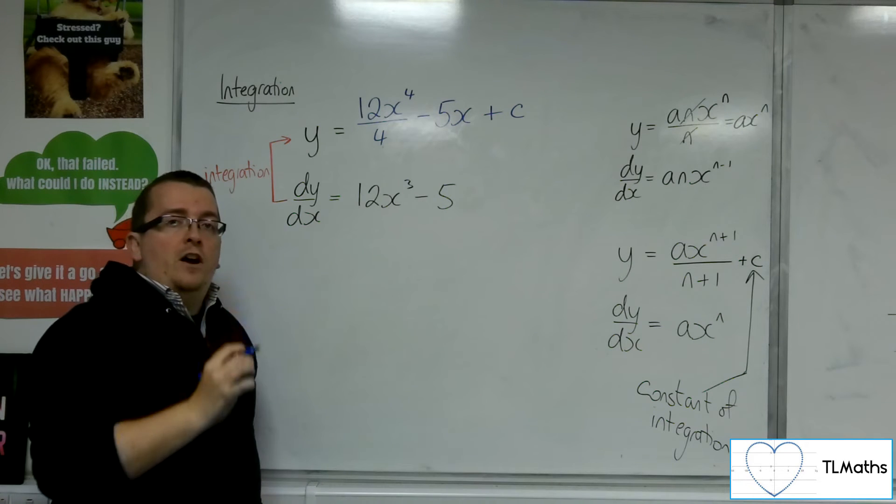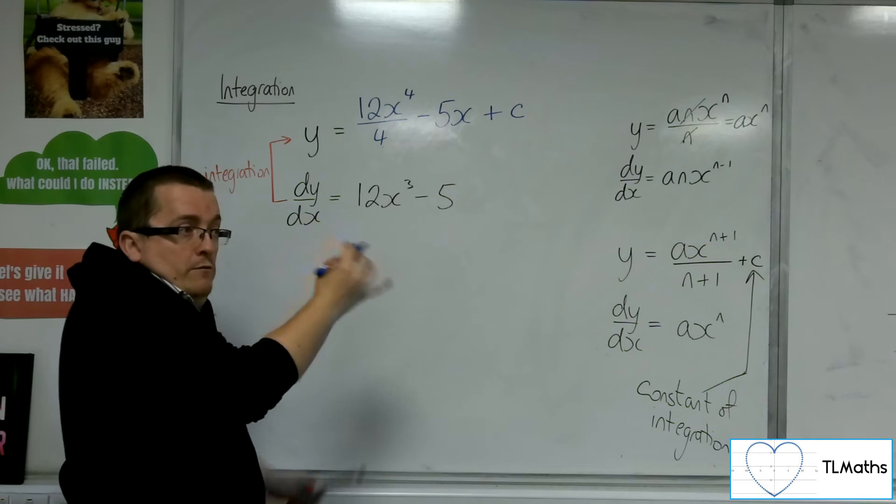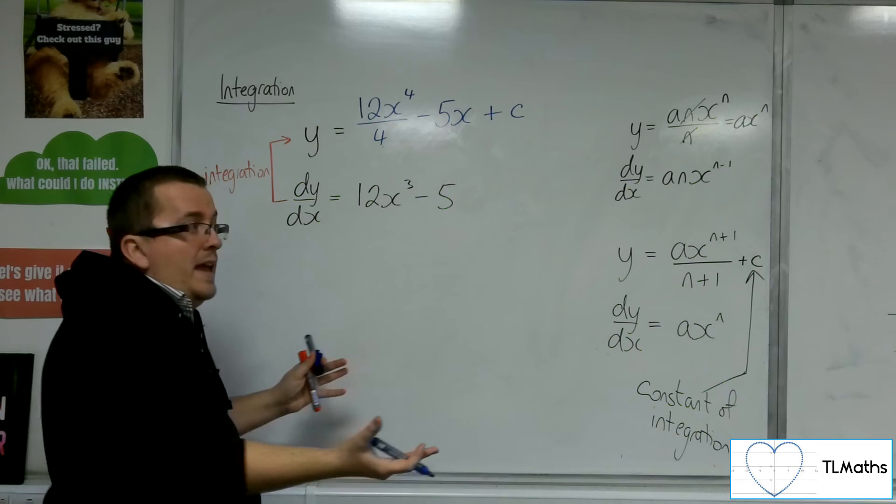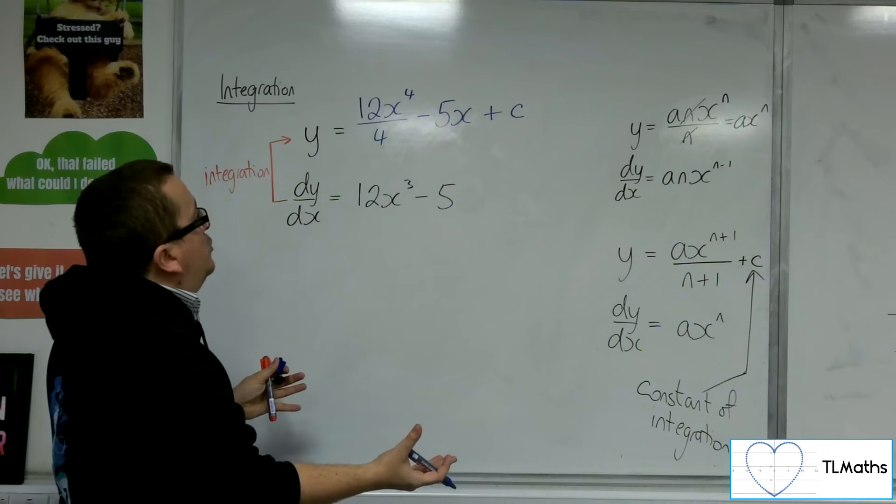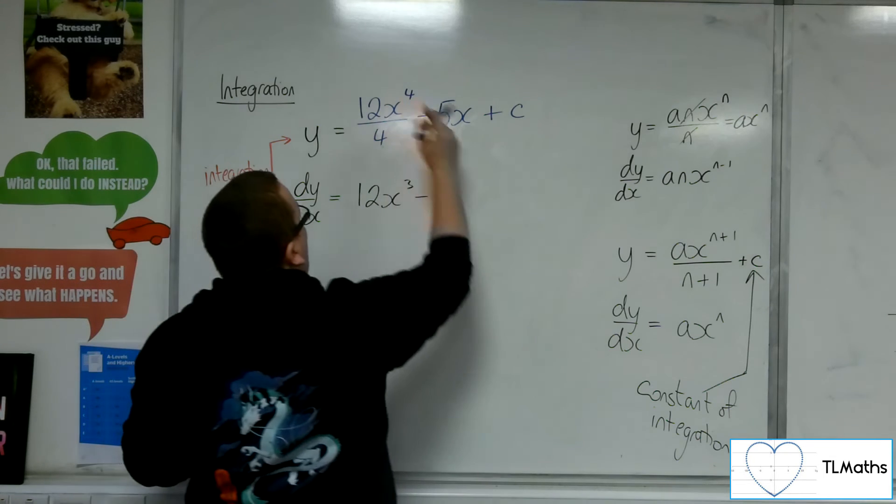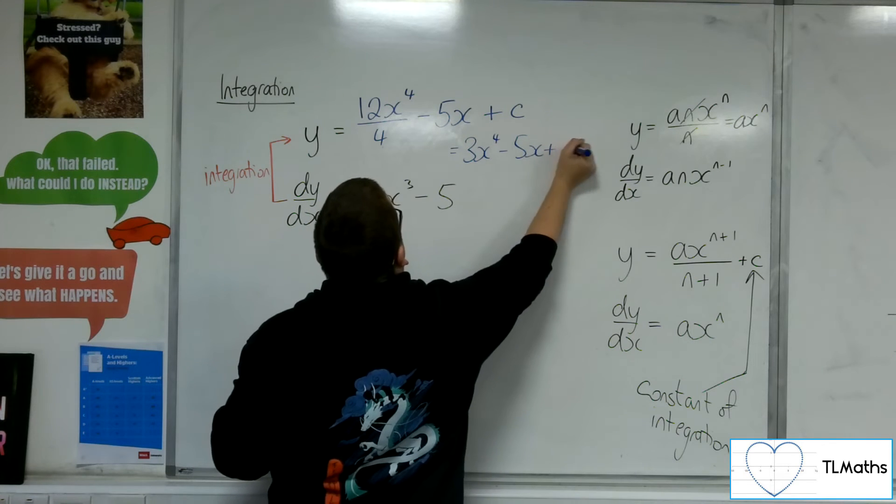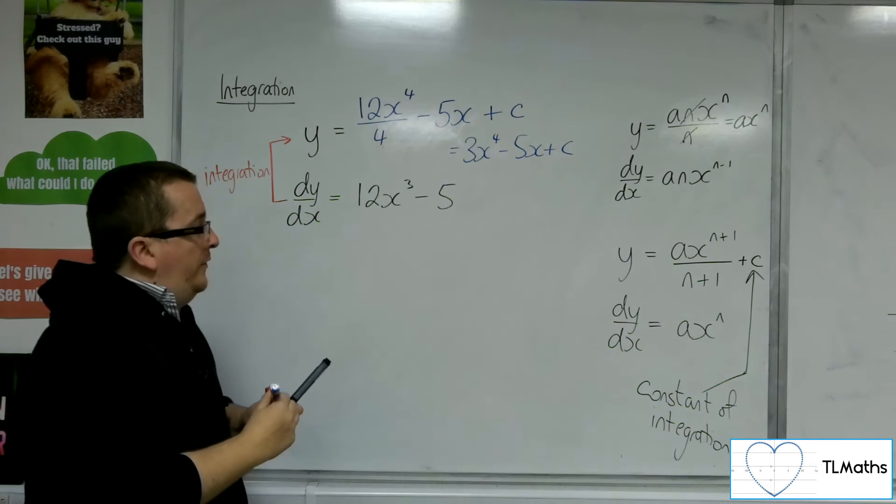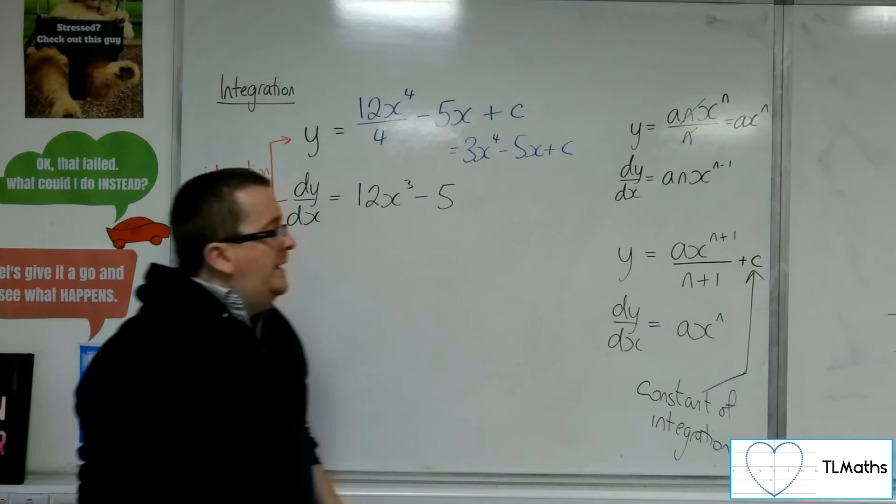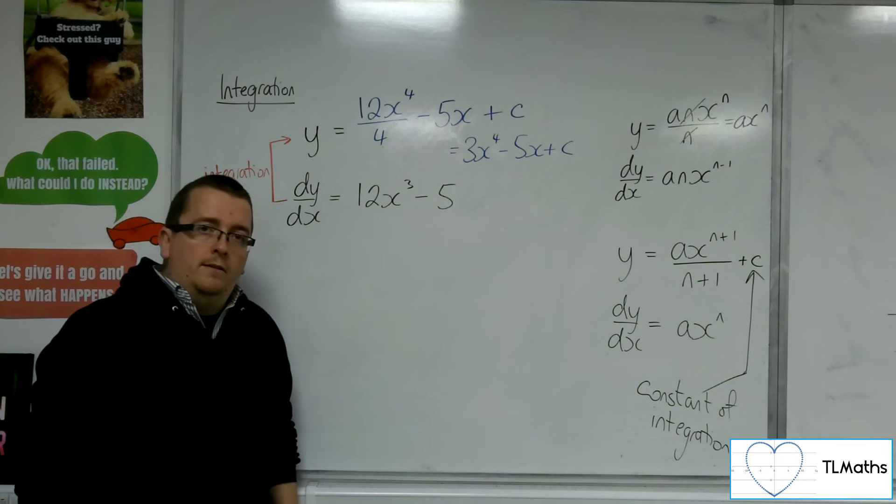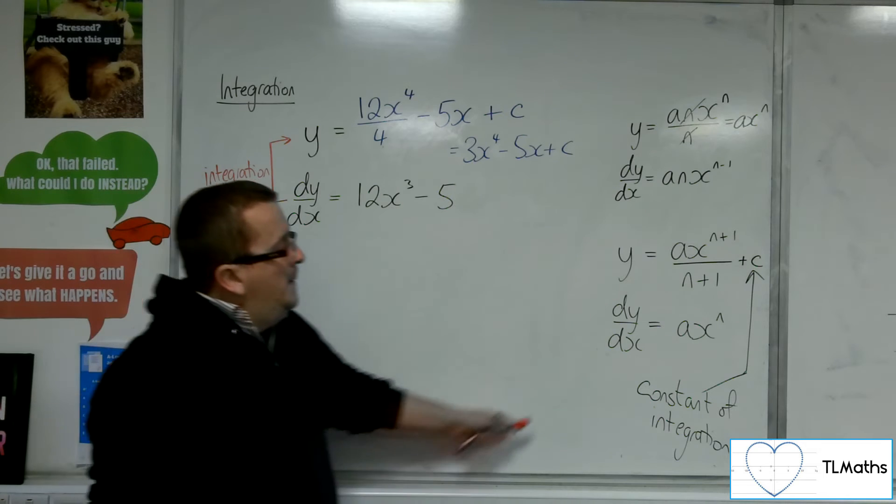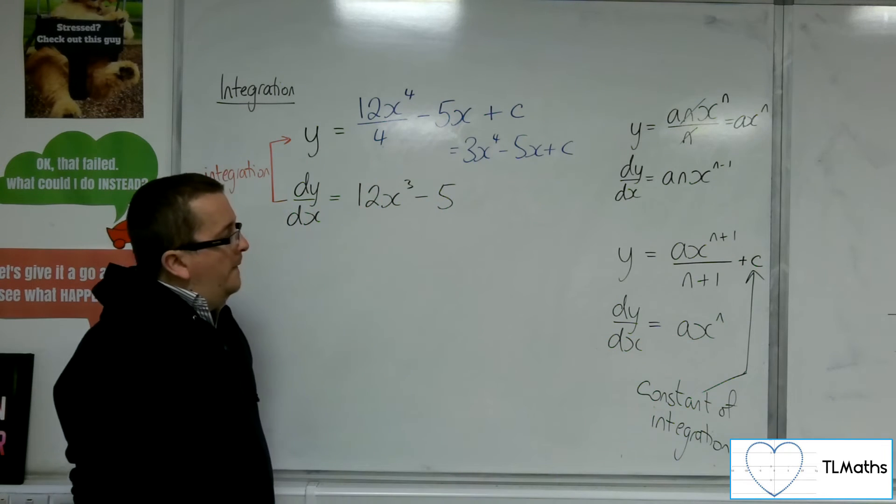Because I don't know. I don't know that it was a 2 that was on the end. I don't have that information. Now, obviously, that can be simplified to the 3x to the 4 minus 5x plus c. So this is how we can integrate something of the form ax to the n.